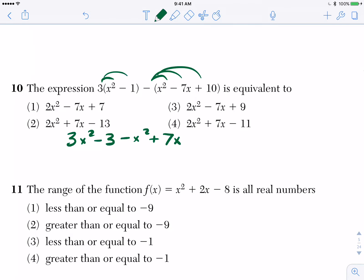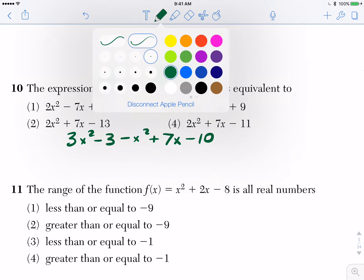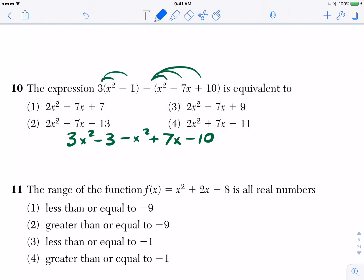So I'm getting rid of the parentheses by distributing the negative, and now I could just simply combine. I don't have to think about two things taking place. I could just kind of match everybody up now.